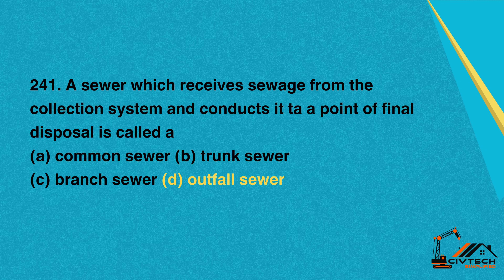Question 241: A sewer which receives sewage from the collection system and conducts it to a point of final disposal is called. A. Common sewer. B. Trunk sewer. C. Branch sewer. D. Outfall sewer. Correct option: D. Outfall sewer.